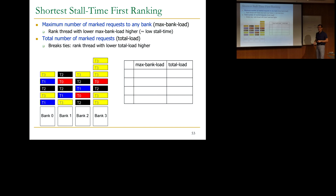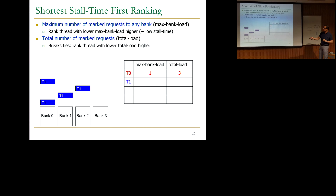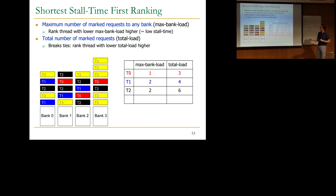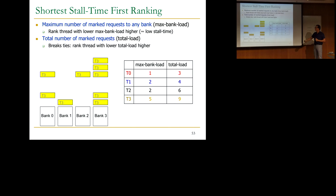For thread 1, the max bank load is 2 — it has two requests to bank 0 — and total load is 4. Thread 2's max bank load is also 2, with two requests each to banks 1 and 2, and total load is 6. Thread 3's max bank load is 5 and total load is 9. So ranking conveniently in this case is: thread 0 ranked highest, then thread 1, then thread 2 due to the total load tiebreaker, then thread 3. The importance of address mapping is also evident — if you distribute requests better across banks, you get a better schedule.